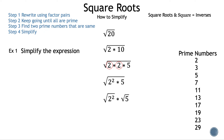We have the square root of 2 squared times 5. Using the product property of square roots, we separate them: square root of 2 squared times the square root of 5. Since squares and square roots are inverses, they cancel, leaving just the 2. Our final answer is 2 times the square root of 5. That is example 1.